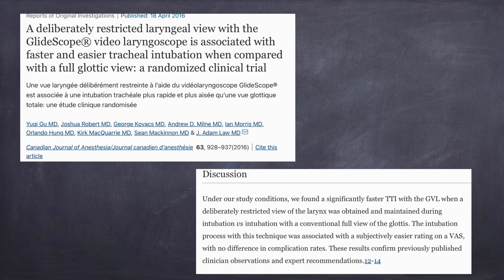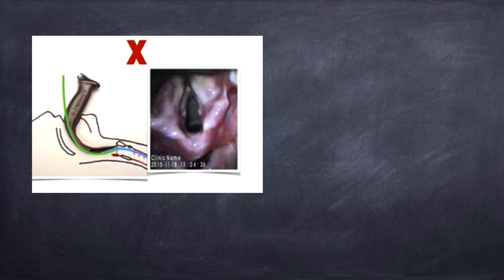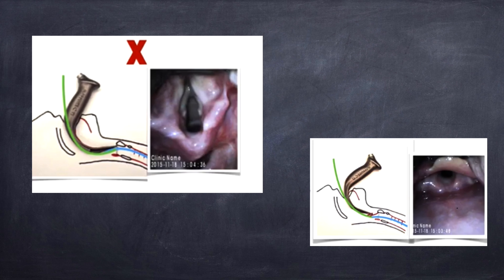Interestingly, an RCT published in the Canadian Journal of Anesthesiology in 2016 concluded that significantly faster intubation time was achieved with LightScope video laryngoscopy when a deliberately restricted view of the larynx was obtained. This is because when the laryngoscope is pushed deep into the vallecula to lift the epiglottis, the angle of ET tube insertion may cause the tube to hit the anterior tracheal wall. By deliberately obtaining a slightly poorer glottic view, the tracheal axis aligns better with the blade, facilitating easier intubation.